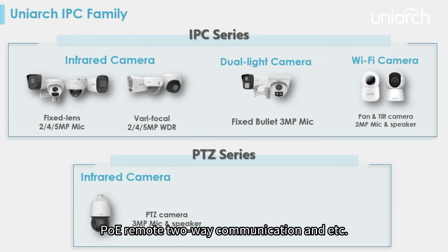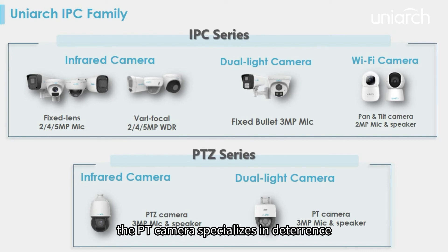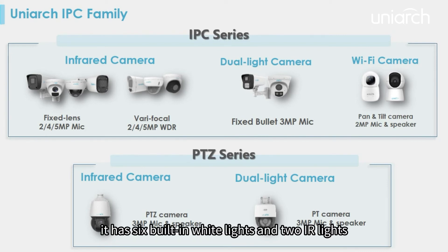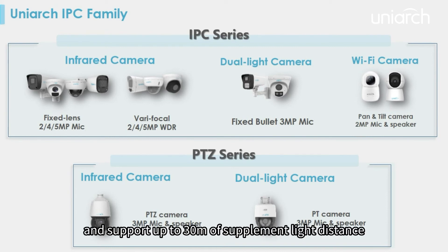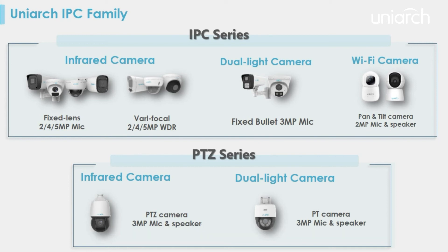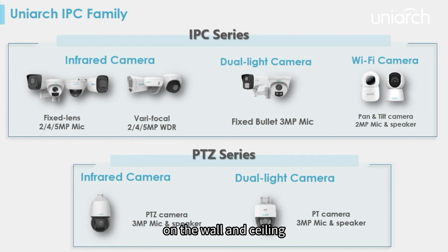The PT camera specializes in deterrence. It has six built-in white lights and two IR lights, enabling three types of smart dual light modes and supporting up to 30 meters of supplementary light distance. The integrated bracket allows it to be easily installed on walls and ceilings.